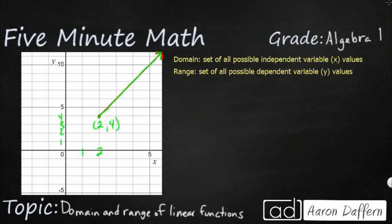So how could we find the domain and the range of this ray that represents a linear function? Well, the domain is the set of all possible independent variable values. We've been looking at dependent and independent variables since middle school. In short, the domain — the independent variables — are just going to be your x values.